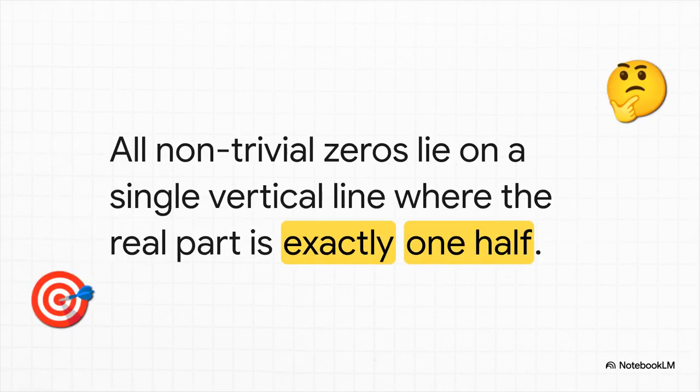This is the moment. The Riemann hypothesis. It is a bold, simple, and profound conjecture. It says that all of these infinitely many non-trivial zeros don't just lie somewhere in that strip. They all lie perfectly on a single, straight, vertical line, right down the middle, where the real part of the complex number is exactly one half. This is the legendary critical line.